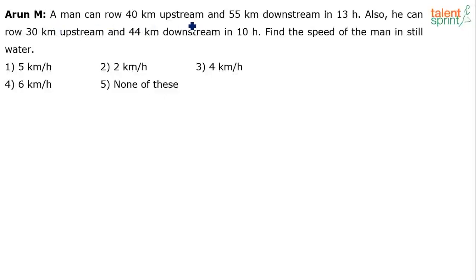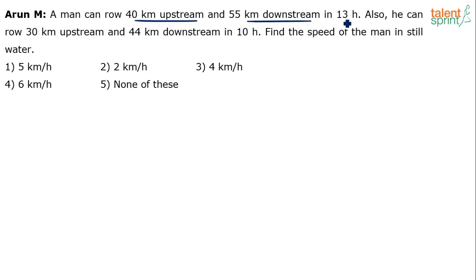A man can go 40 kilometers upstream and 55 kilometers downstream in 13 hours. Also, he can row 30 kilometers upstream and 44 kilometers downstream in 10 hours. So we have two cases: case one — 40 km upstream and 55 km downstream in 13 hours, and case two — 30 km upstream and 44 km downstream in 10 hours.